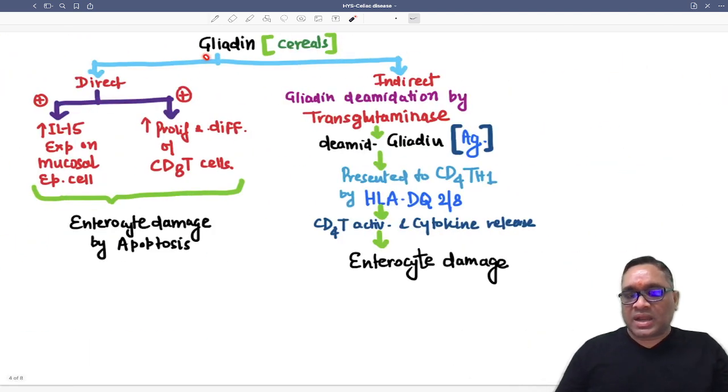What is the pathogenesis? Gliadin, which is present in cereals, acts by two mechanisms. One is called direct method, second is called indirect method. Direct method: they will stimulate activation of interleukin-15, which will increase expression on the mucosal epithelial cell.